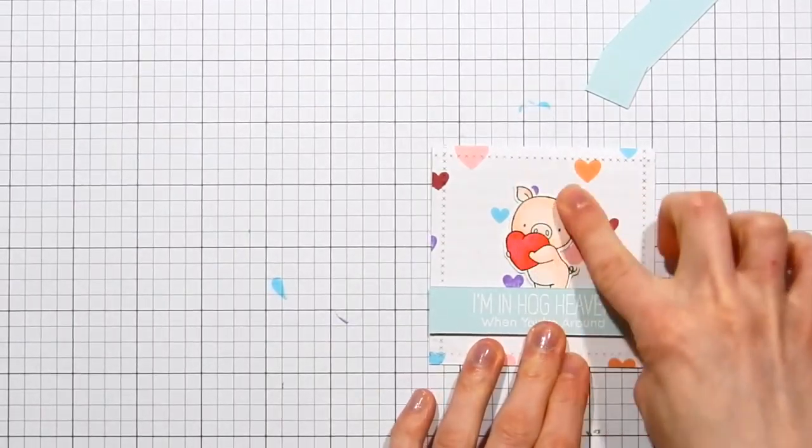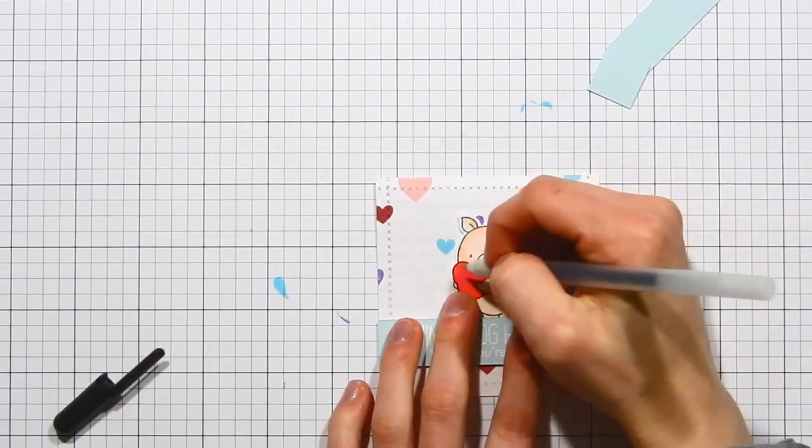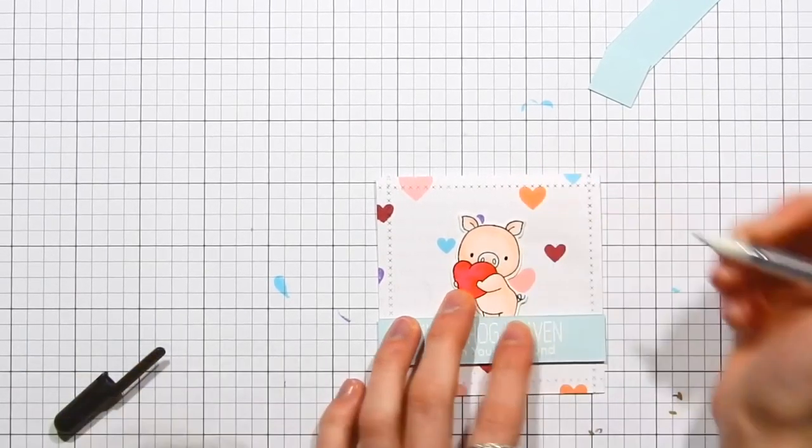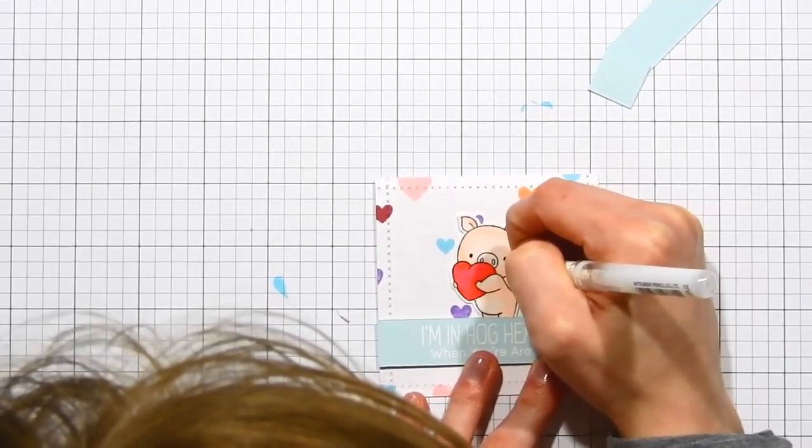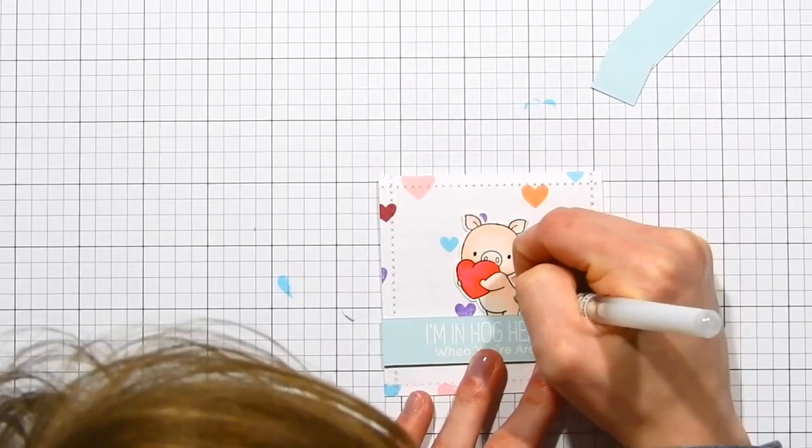Now I'm tucking the pig underneath of that little sentiment banner. For some detail on the pig, I went over his eyes with the black Sakura glaze pen. I also used the Signo white gel pen to add some white dot detail to his cheeks and also to his body. I just think it really adds a little bit of decorative element to the pig.